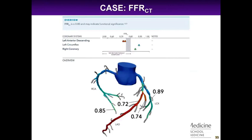For our patient with intermediate stenosis, we sent them for FFR CT. The RCA was normal, the circumflex also had normal flow, but the LAD had stenosis in the proximal to mid-portion with an FFR CT value of 0.72 to 0.74. There is a gray zone: 0.75 to 0.8 is borderline, anything less is abnormal, anything higher is normal. This result falls very close to that gray zone.